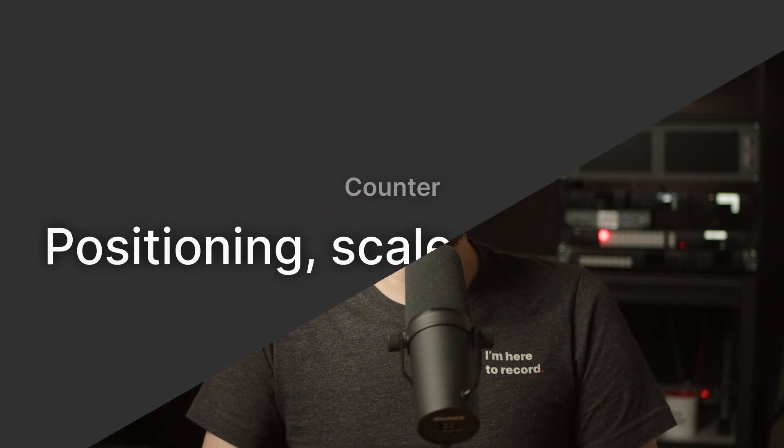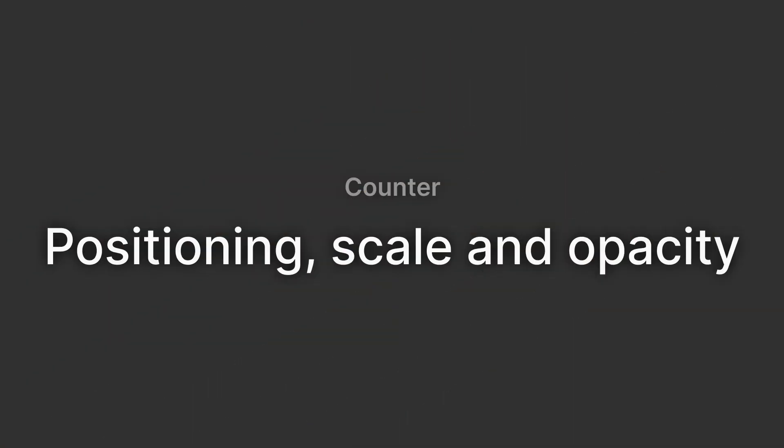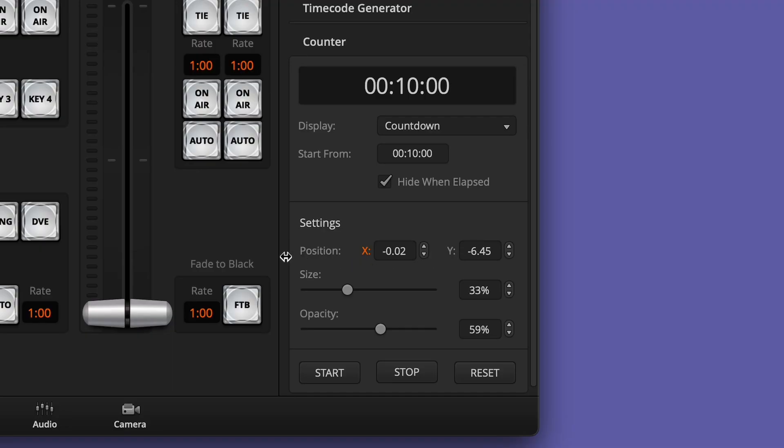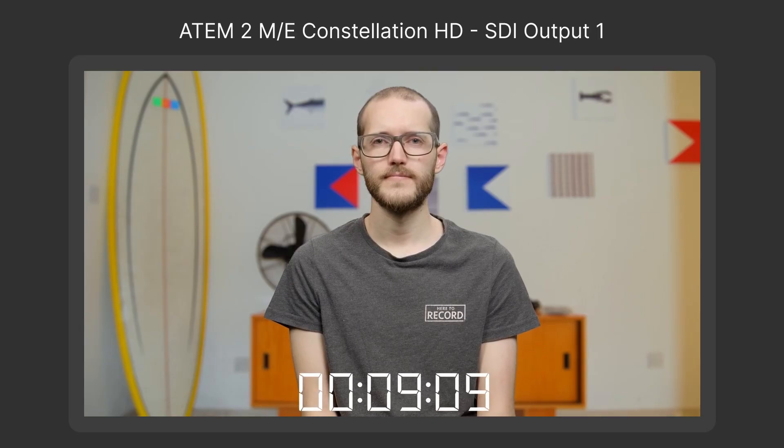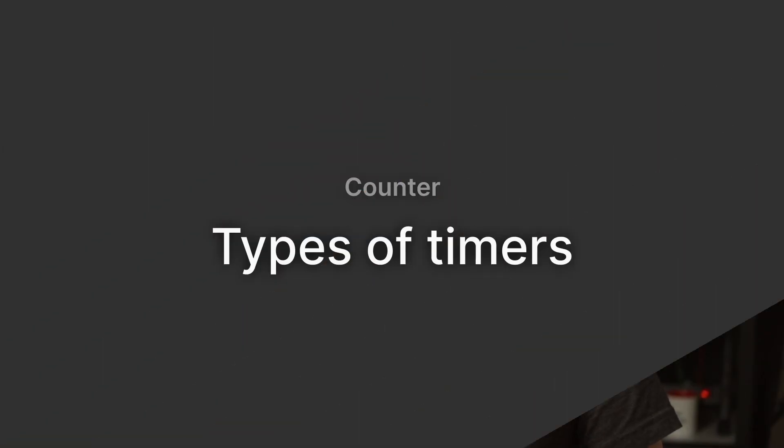I can send this to a monitor in front of a stage or maybe to a remote contributor so they can keep track of their allotted time. From here we can position and scale the counter to wherever we want on the screen, and we can lower the opacity — particularly useful if you don't want to block some important information behind it.